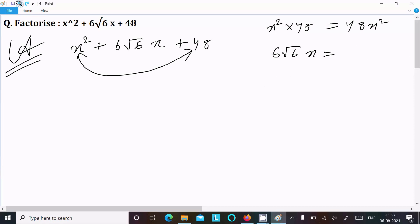I'm going to try with a different combination of numbers. Writing this time 4√6x + 2√6x. If I multiply 4√6x into 2√6x, 4 × 2 is 8, 8 × 6 is 48x². So 48x² is equal here, so we can take this combination. If you add these, it equals 6√6x.